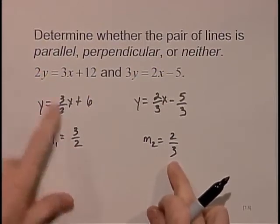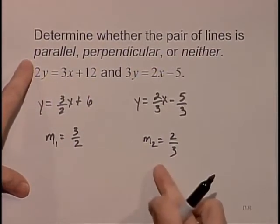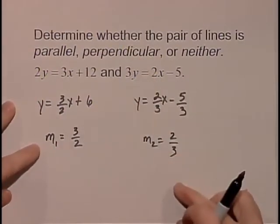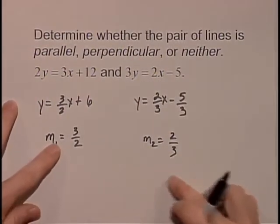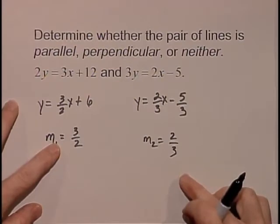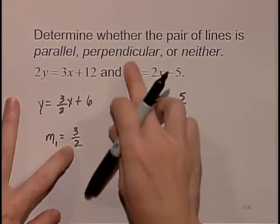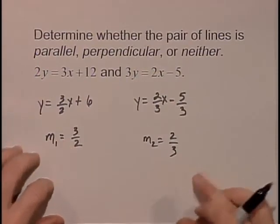Looking at these two slopes, to be parallel they would have to be identical. They'd have to be equal, and they're not. By definition of perpendicular lines, we would need these slopes to be negative reciprocals. Neither one of these is negative, so it doesn't fit the definition for perpendicular lines.